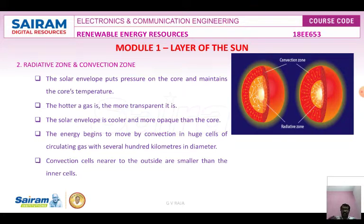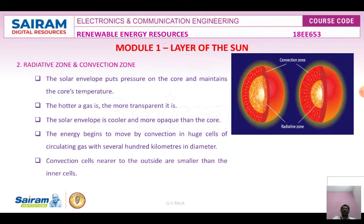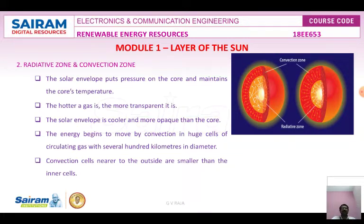The solar envelope is cooler and more opaque than the core, making radiation less efficient for energy transfer. Heat energy builds up outside the radiative zone and begins to move by convection, in huge cells of circulating gases — helium, hydrogen, and others — several hundreds of kilometers in diameter. Convection cells nearer to the outside are smaller than inner cells; each cell is called a granule. When observed through a telescope, granules appear as small tiny specks on the sun's surface.